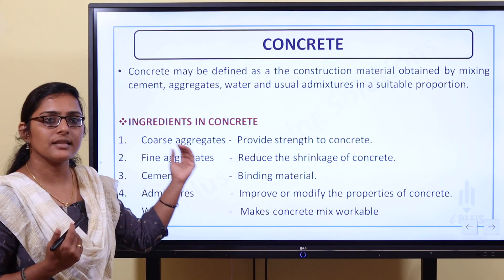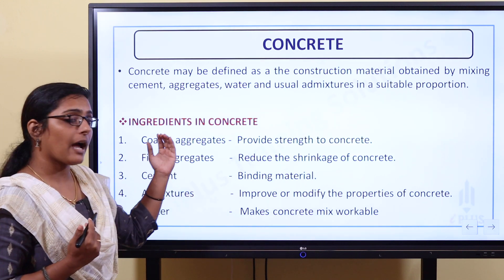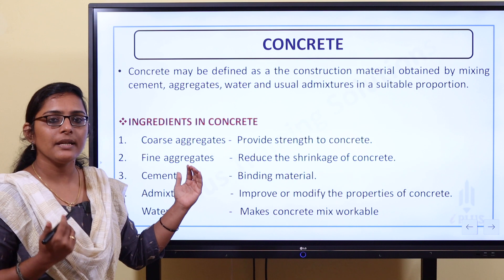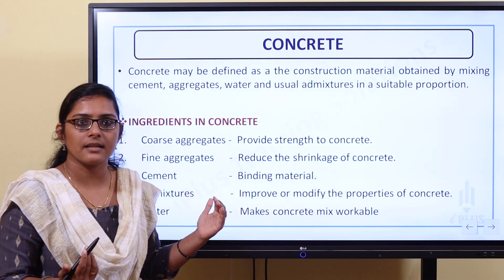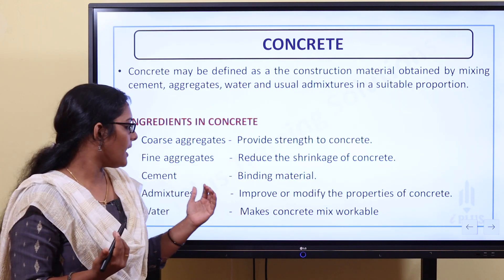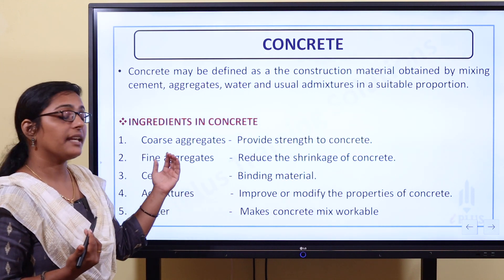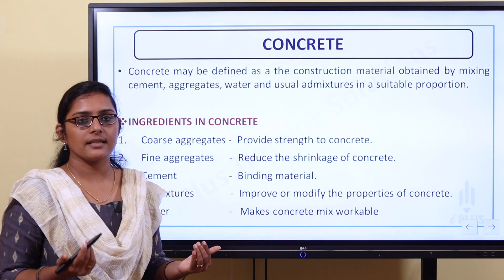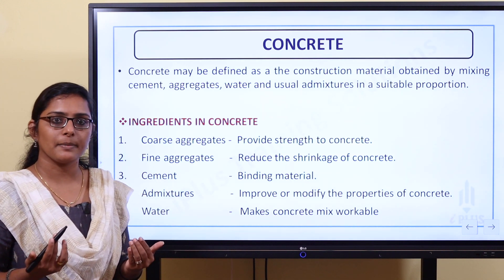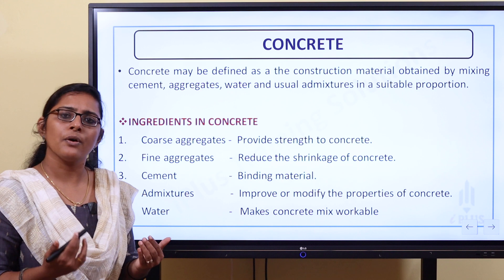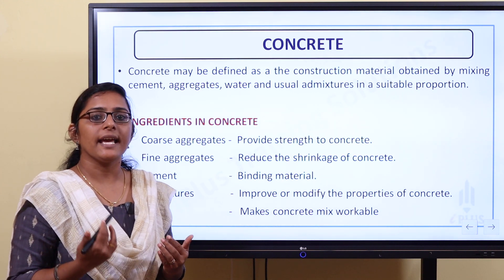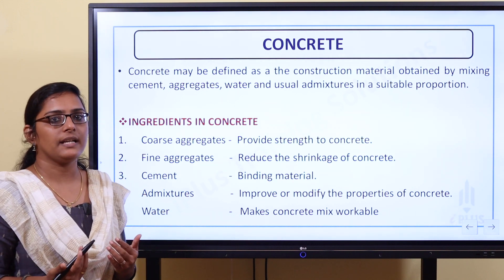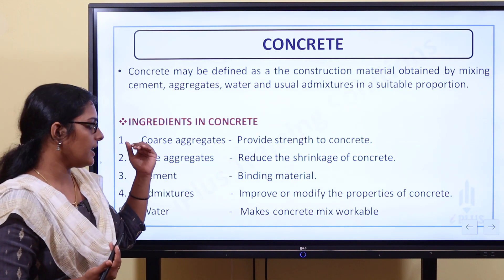Coarse aggregate provides strength and also acts as a retarder. Then, if we have fine aggregate, it reduces the shrinkage of concrete. If we learn about concrete properties — creep, shrinkage, etc. — there is a volume reduction due to the escape of moisture from concrete. To reduce that volume reduction, we use fine aggregate.